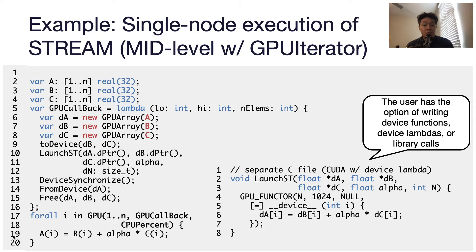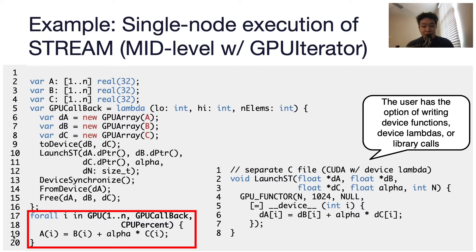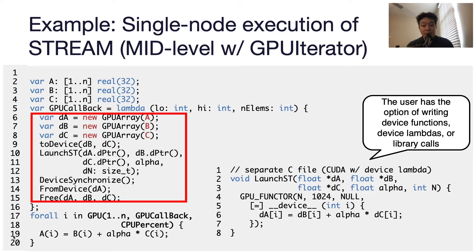What you see here is a complete Chapel plus CUDA program for stream with the GPU API and the GPU iterator. First, on line 17, the original forward loop is executed with the GPU iterator, which internally divides the iteration space into a CPU portion and a GPU portion by looking at the CPU percent parameter on line 18. For the GPU portion, the lambda function on lines 5 to 16 is supposed to do GPU memory allocation, data transfer, and kernel invocation. In this example, the medium-level API is used. On lines 6 to 8, GPU arrays are allocated by taking the Chapel arrays, and those device pointers are fed into the kernel launching function on line 10.